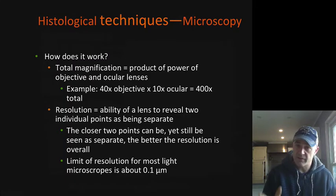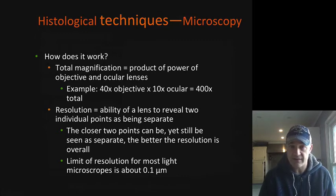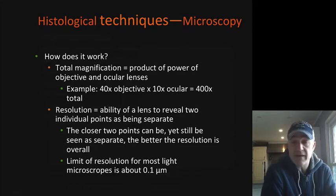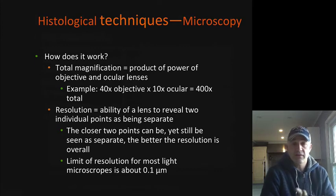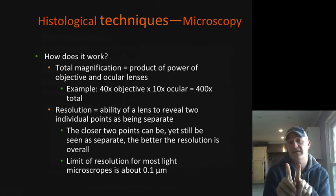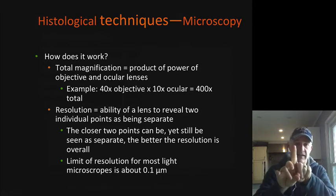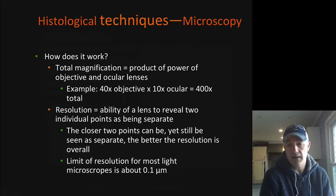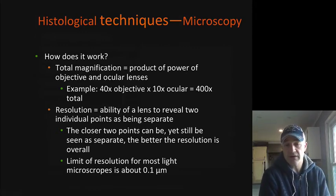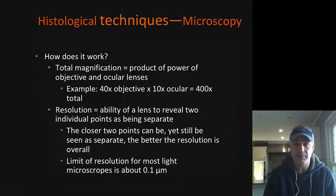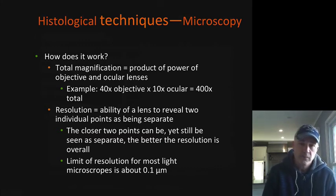Total magnification is the objective lens times the ocular. So if you have a 40x objective and a 10x ocular, that's 400x magnification. When you start going too high in magnification, you start losing resolution. Resolution is basically like a TV — two distinct points are distinct. If you don't have enough resolution, you might see only one thing. Light microscopes go to about 0.1 micrometers, and around 1000 to 2000 times magnification is really the limit. Once you want to go higher magnification, you have to start using a different illumination source.